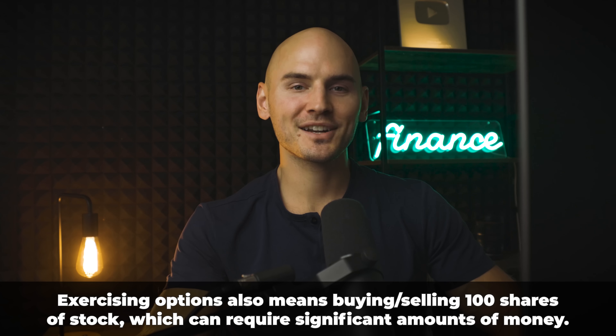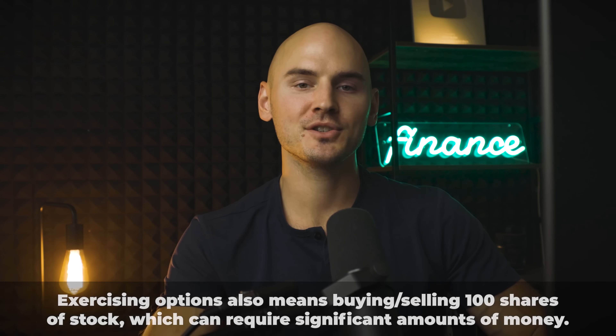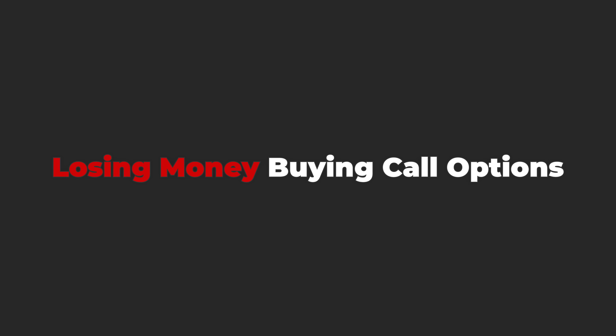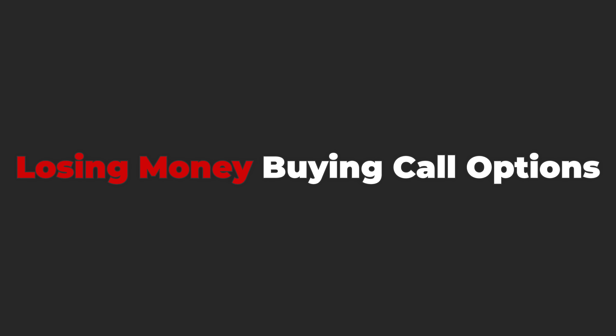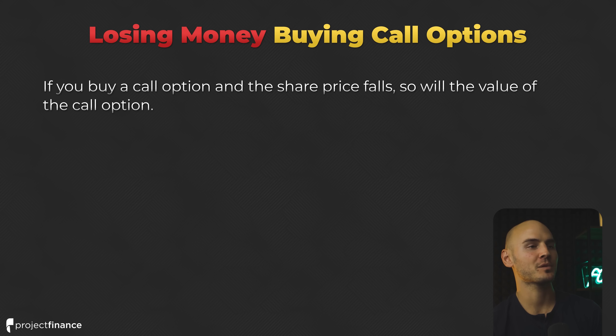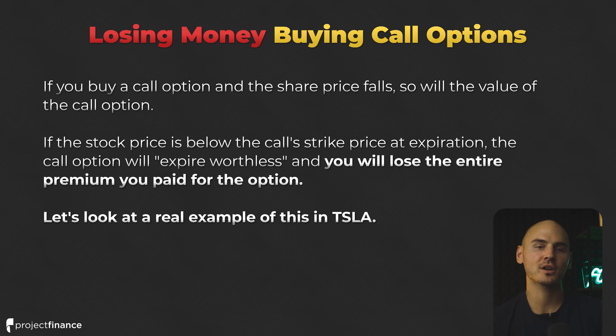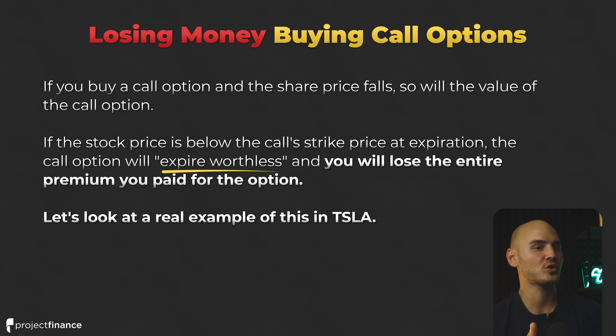We're going to talk more about exercising options later in the video, since fundamentally that is where option prices and values come from. But for now, just understand that as options traders, we make money from buying options and selling them at higher prices. If you buy a call option and the share price falls, so will the value of the call option. And if the stock price is below the call strike price at expiration, the call option will expire worthless, and you will lose the entire premium you paid for the option.